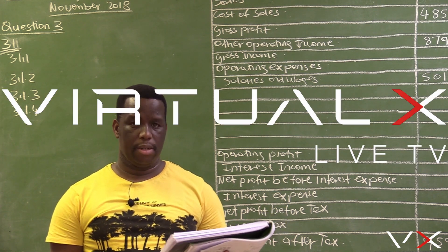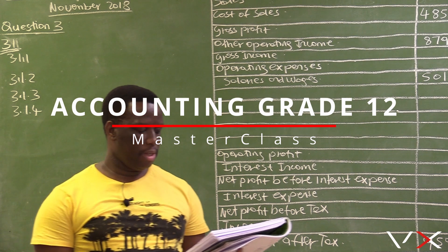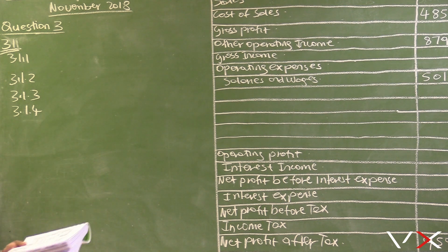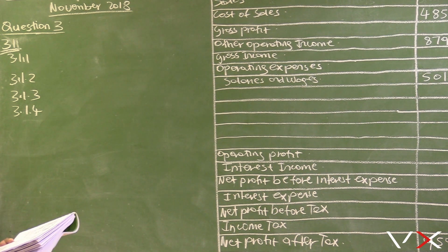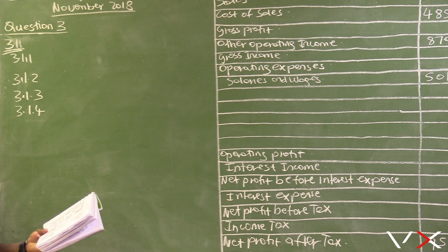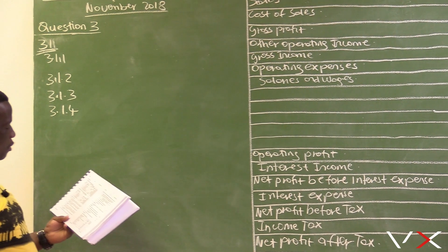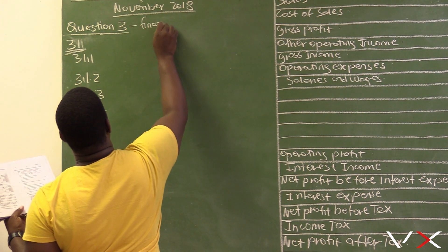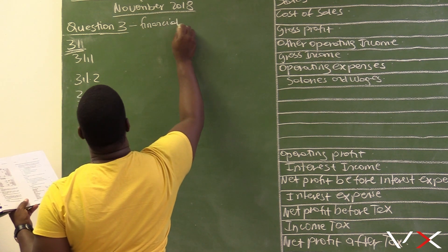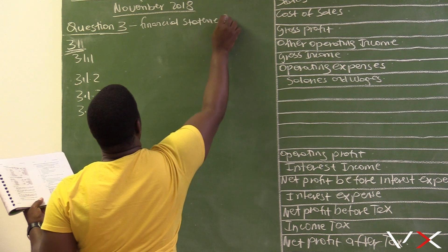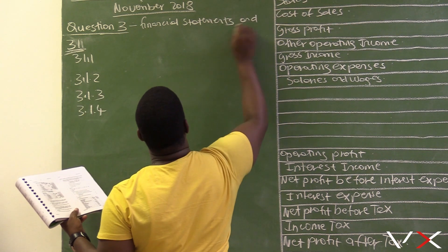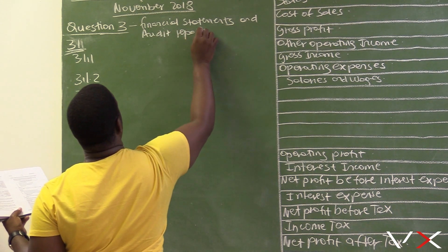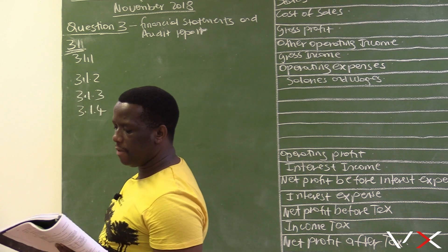Good day everyone. We are doing an accounting masterclass focusing on the Grade 12 syllabus, and today we are doing the November 2018 exam. This paper was written in November 2018 and we are doing Question 3, which is based on financial statements and audit report. This question is 75 marks.